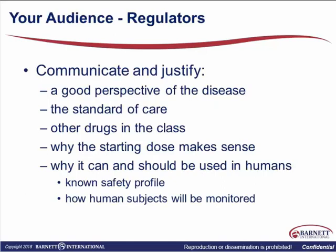From a regulatory perspective, what you want to do with your investigator's brochure is communicate and justify the following: a good perspective of the disease itself, the standard of care currently in use if there is one, what's going on with other drugs in the class and how that pertains to the compound you're developing, why the starting dose makes sense — especially early in phase one — and why it's safe to use the dose or dosage regimens you're starting with and escalating to. We also have to show a known safety profile and how safety will be monitored in human subjects. This is what regulators are really concerned about.